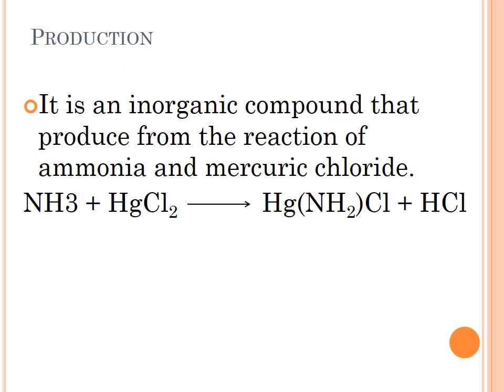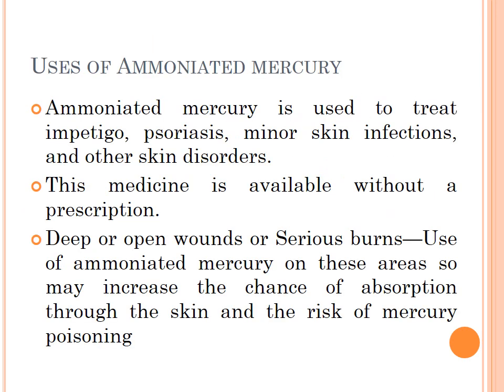How can it be light-resistant? Ammoniated Mercury is sensitive to light. According to the reaction equation, ammoniated mercury solution plus mercuric chloride produces ammoniated mercury solution plus hydrochloric acid — which is why light-resistant storage is required.